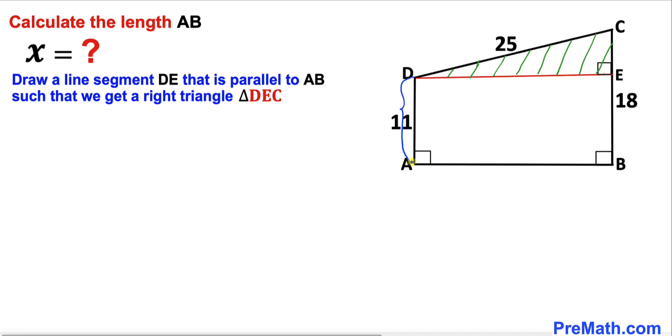Now let's observe this thing. This side length is 11, this whole side length is 18, so therefore this side length CE is going to be 18 minus 11, which is 7 units.